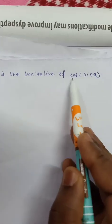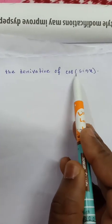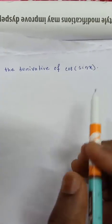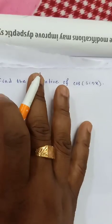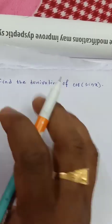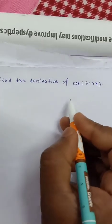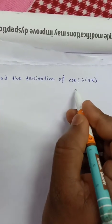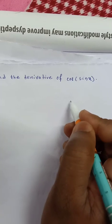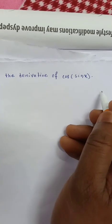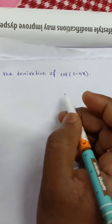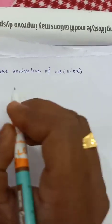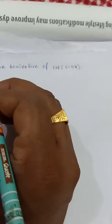Find the derivative of cos of sin x. We know that the derivative of cos is minus sin, and the derivative of sin is cos.